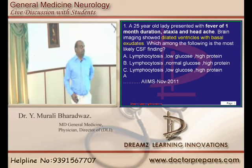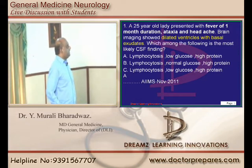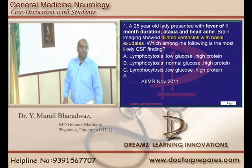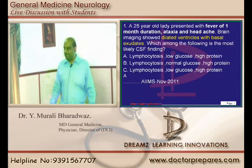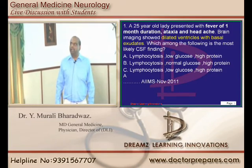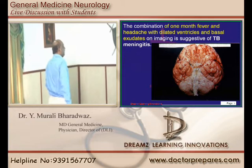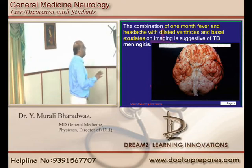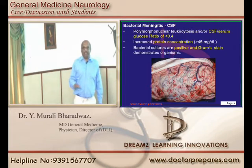A 25-year-old lady presented with fever of one month duration with ataxia and headache, and the brain imaging is showing dilated ventricles with basal exudates. This combination of long-duration fever, headache, dilated ventricles, and basal exudates is all suggestive of tuberculous meningitis — that is what you need to basically remember.